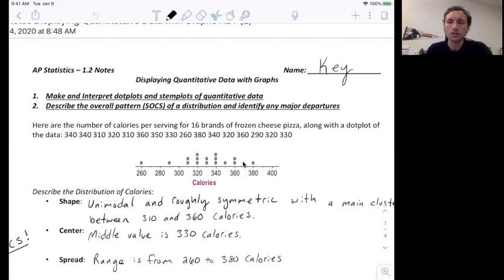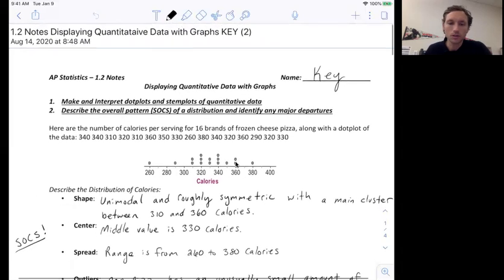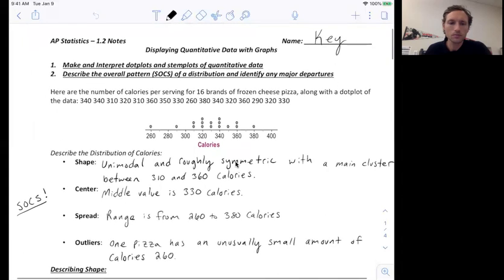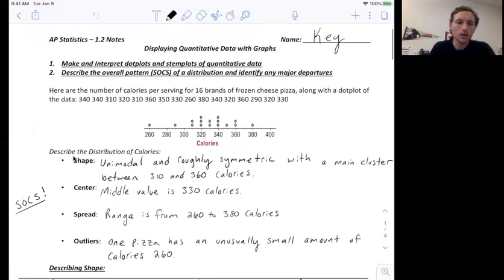What I really want to focus on is how to describe the distribution. And remember, a distribution shows the values that are being taken and the number of times it takes that value. For instance, 360, there are two pizzas that have the value of 360 calories. So to describe this distribution, you're going to want to remember your SOCS, is what we say. So SOCS stands for shape, outliers, center, and spread. Just a helpful way to remember that.